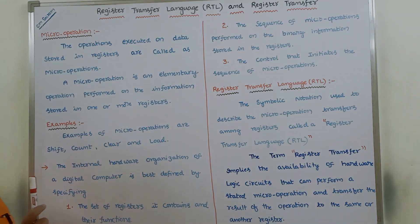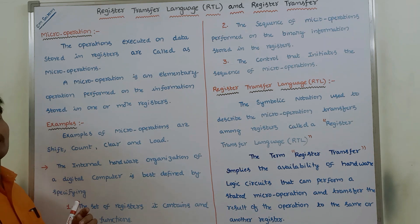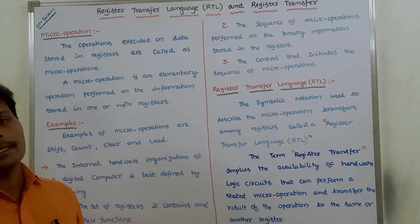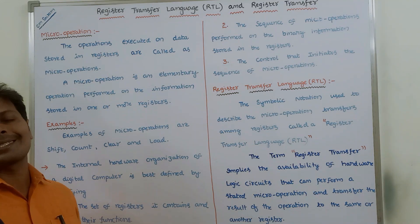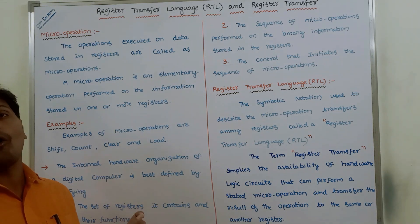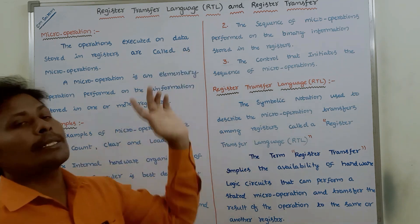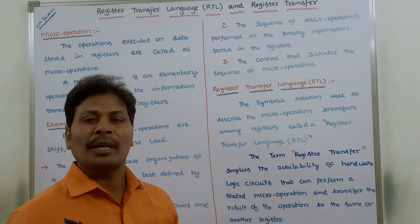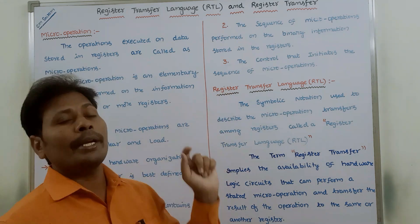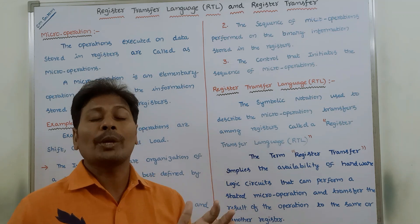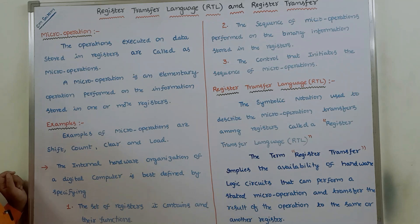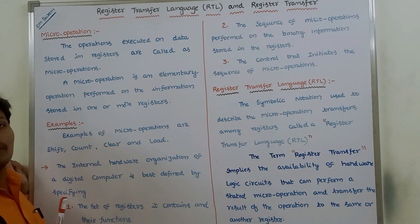Next, how can you say that the internal hardware organization of a computer is best? By using three points, we can say that the internal hardware organization of a digital computer is best. First point: how many registers it contains and what is the function of each and every register? Second point: how many sequences of micro operations can be performed on the binary information stored in the registers? Third point: what is the control used to initiate the sequence of micro operations?